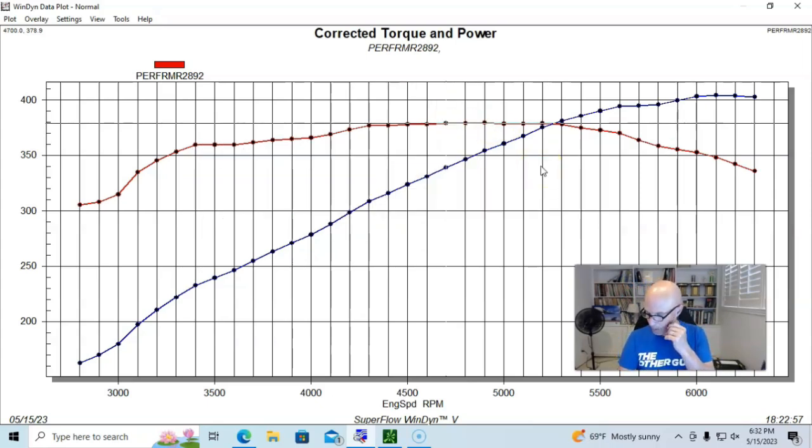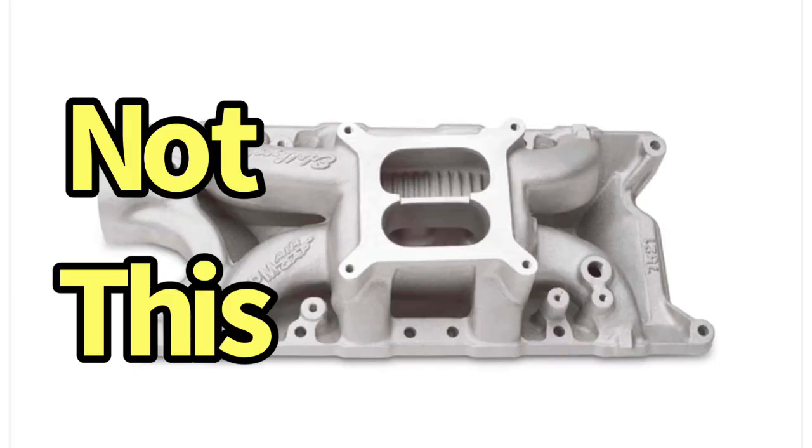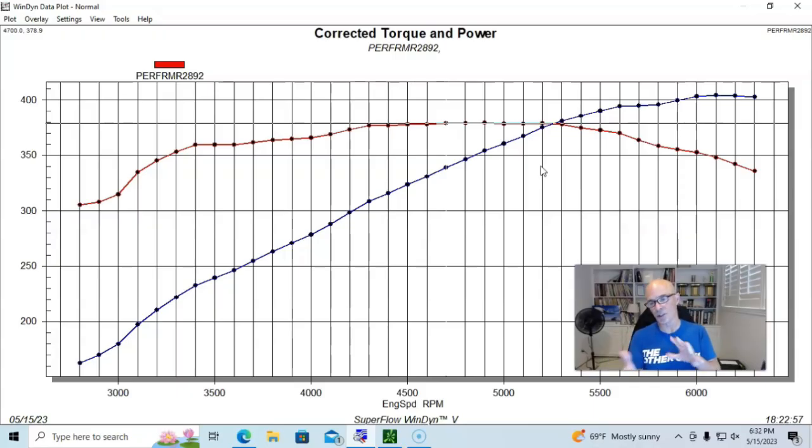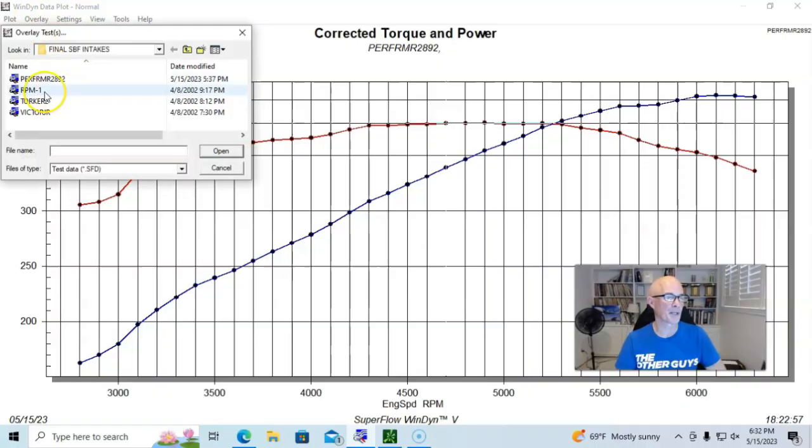It did well, it's a good starting point. But let's compare that to the other dual plane that we ran. This is a Performer RPM, and not even a Performer RPM Air Gap, so it didn't have the air flowing underneath it. And as we know, the RPM Air Gap is more than just the air space underneath. The internals of the manifold are also told to be different. So the RPM Air Gap manifold is supposed to be a different manifold than the RPM, but we ran your standard RPM.